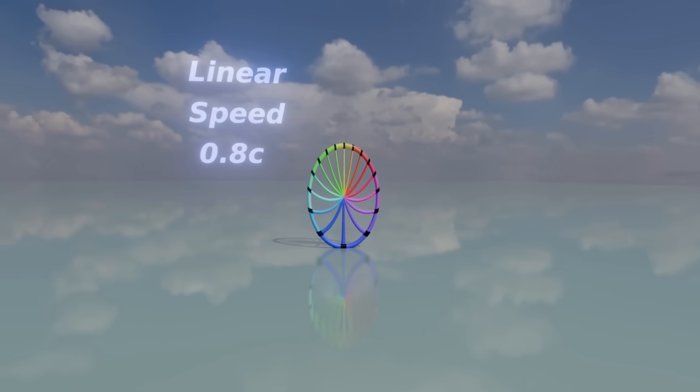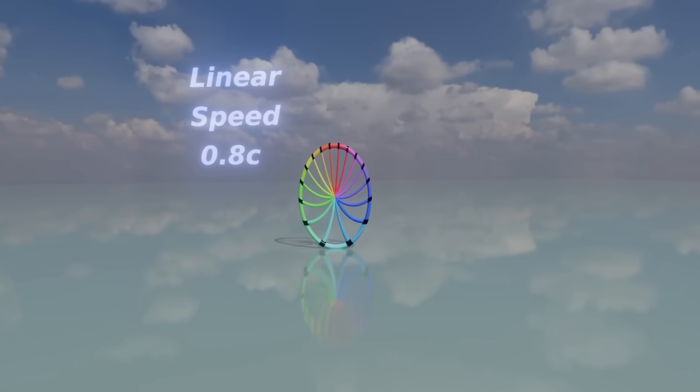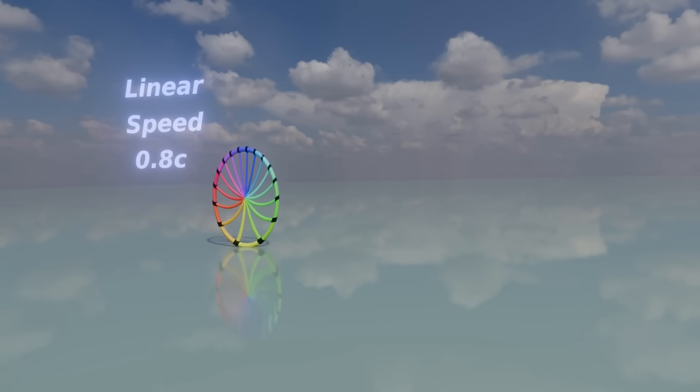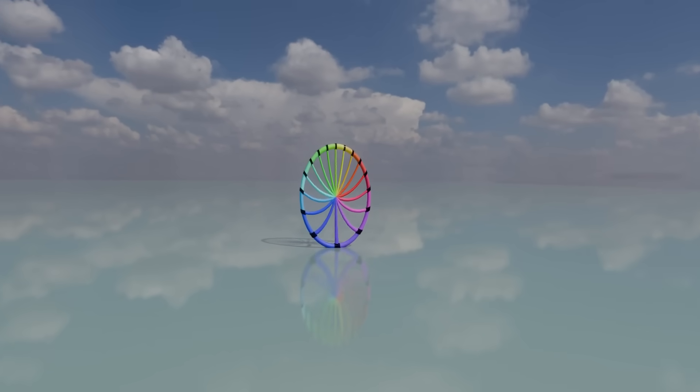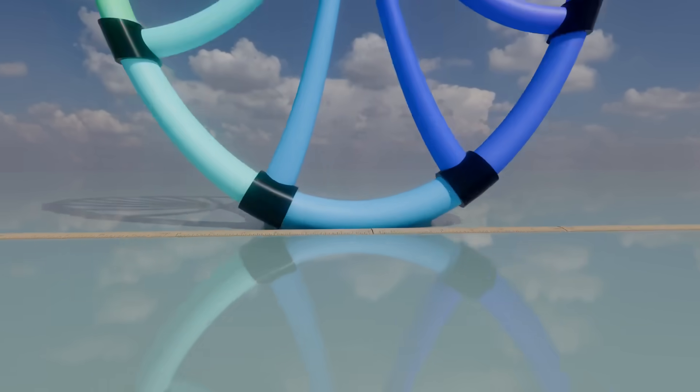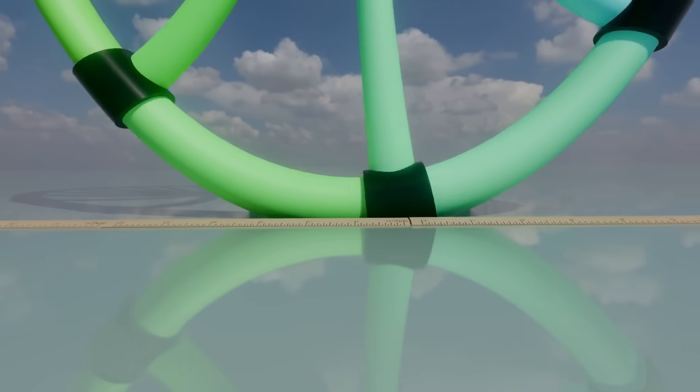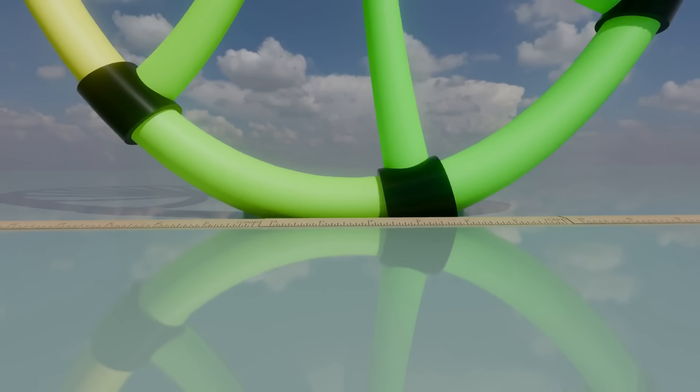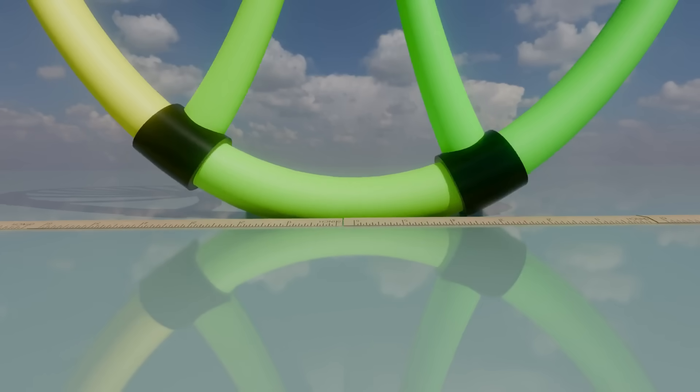Although it will turn the circle into an ellipse and bend the spokes. More of that later. And now we can deduce the proper circumference with the following procedure. At each moment, the one segment that is touching the ground is momentarily at rest with respect to us.